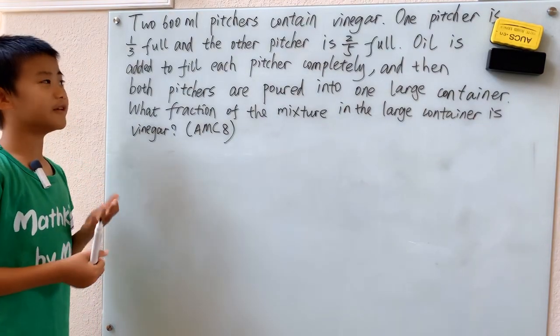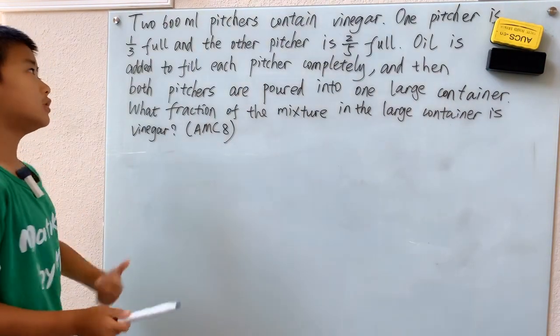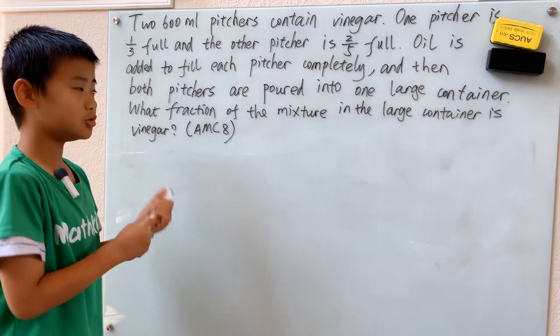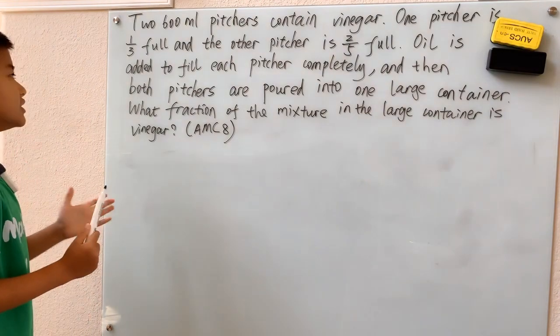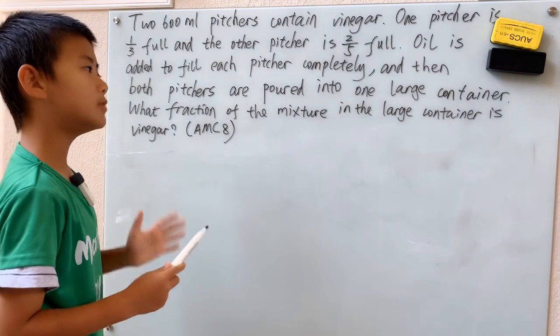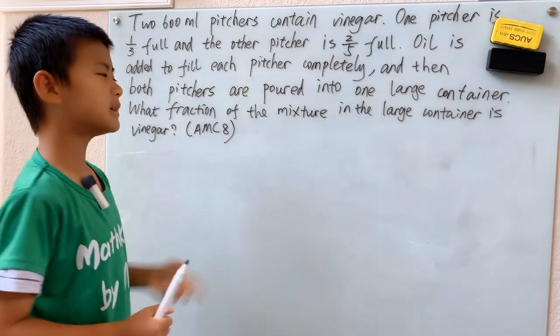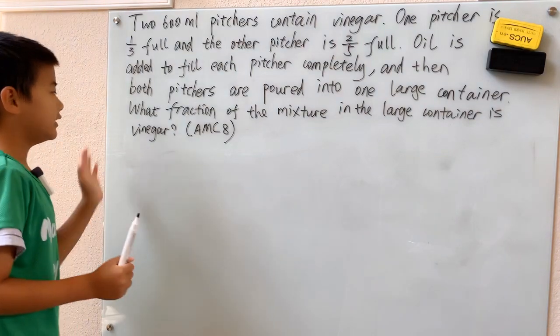Two 600 milliliter pitchers contain vinegar. One pitcher is one-third full and the other pitcher is two-fifths full. Oil is added to fill each pitcher completely and then both pitchers are poured into one large container. What fraction of the mixture in the large container is vinegar?